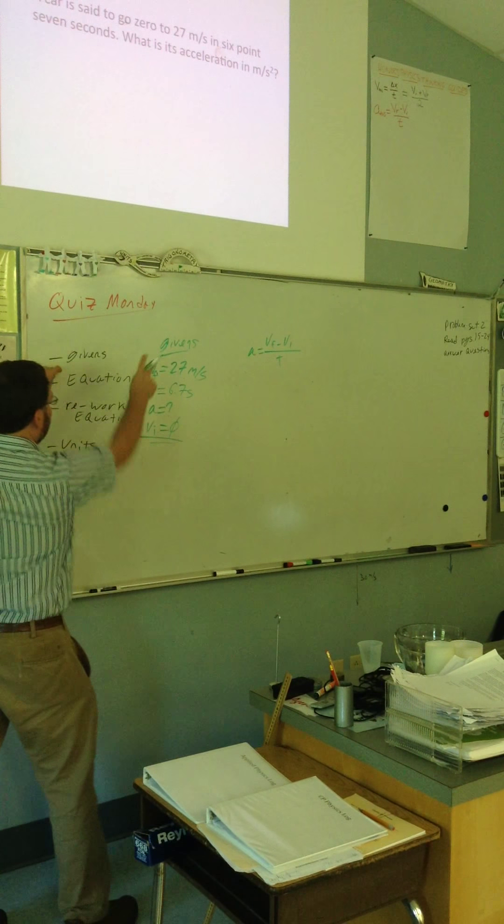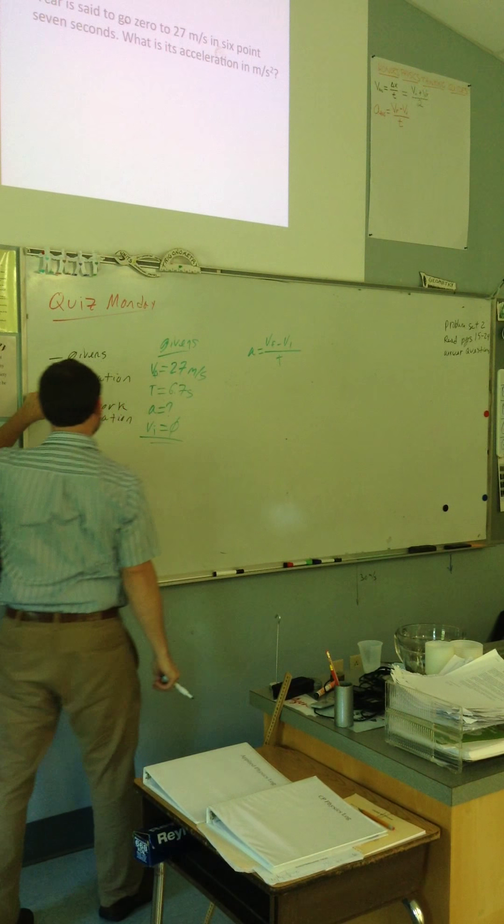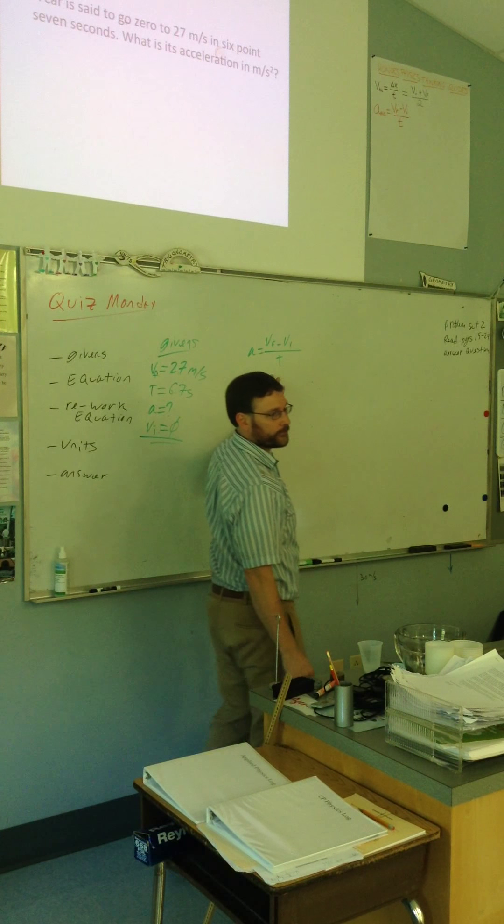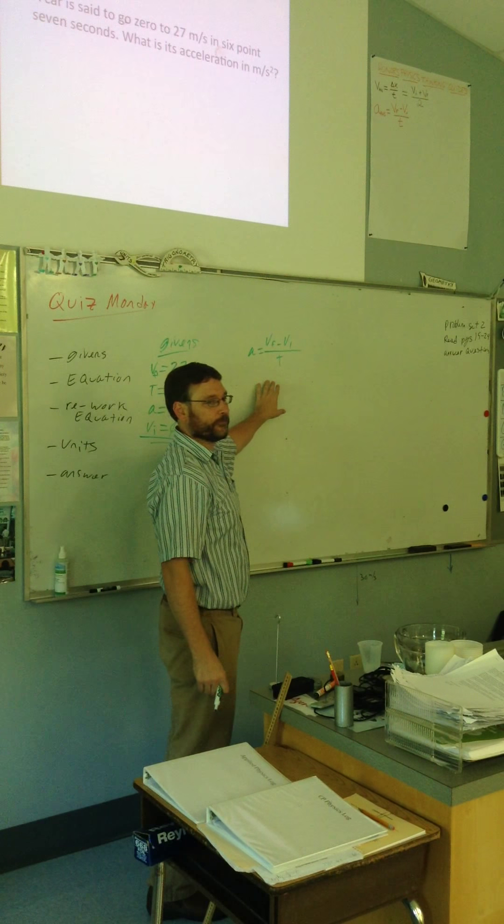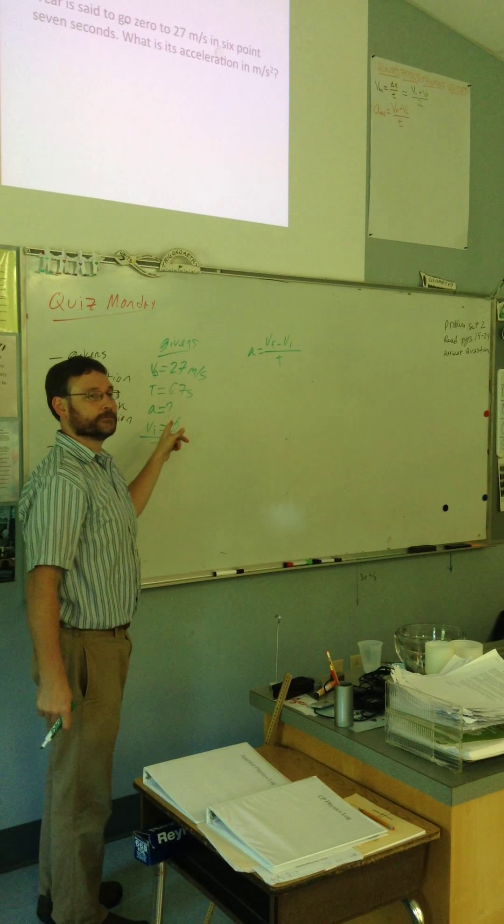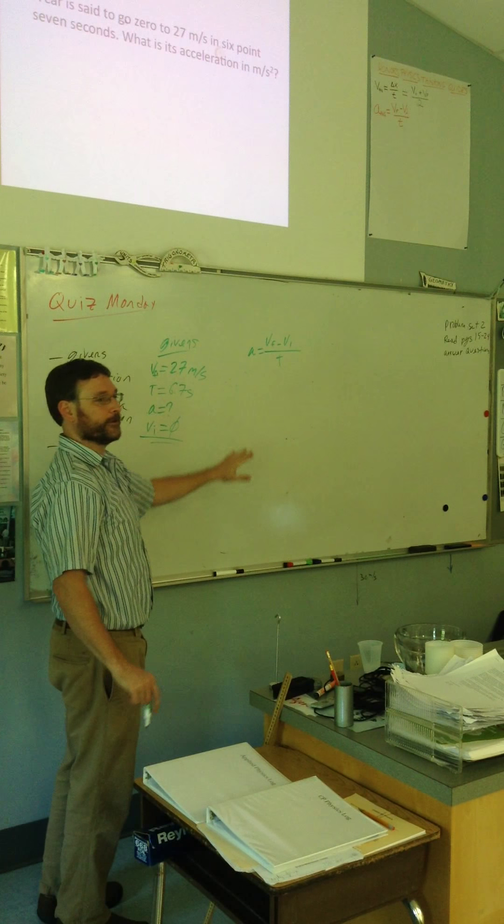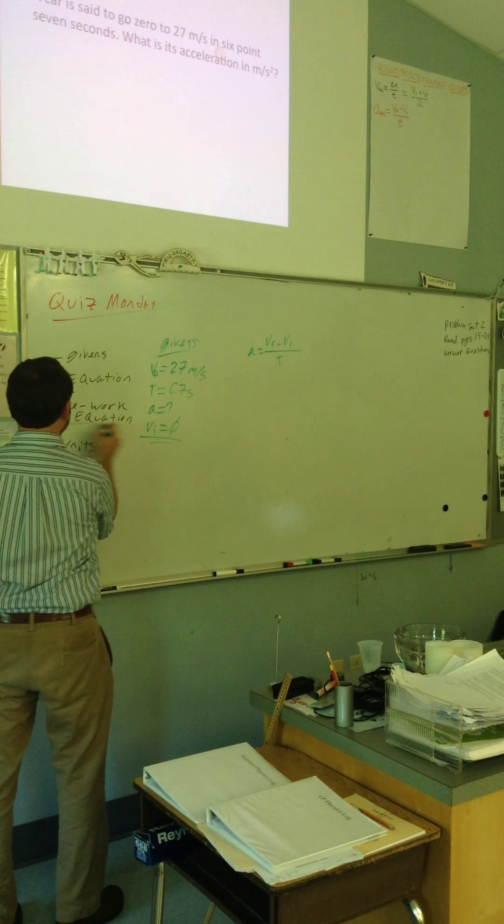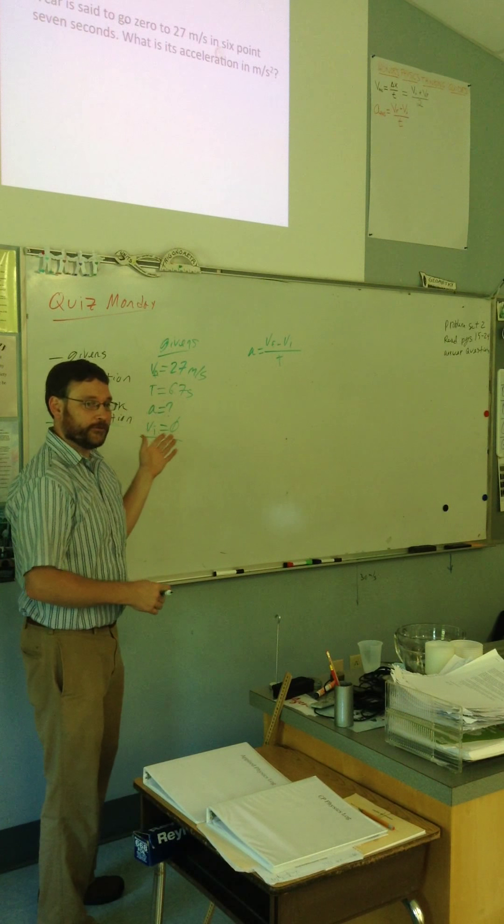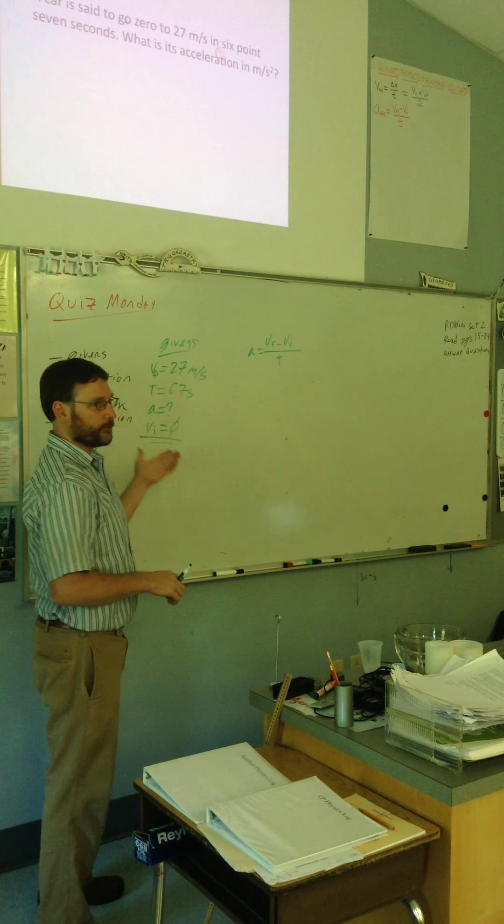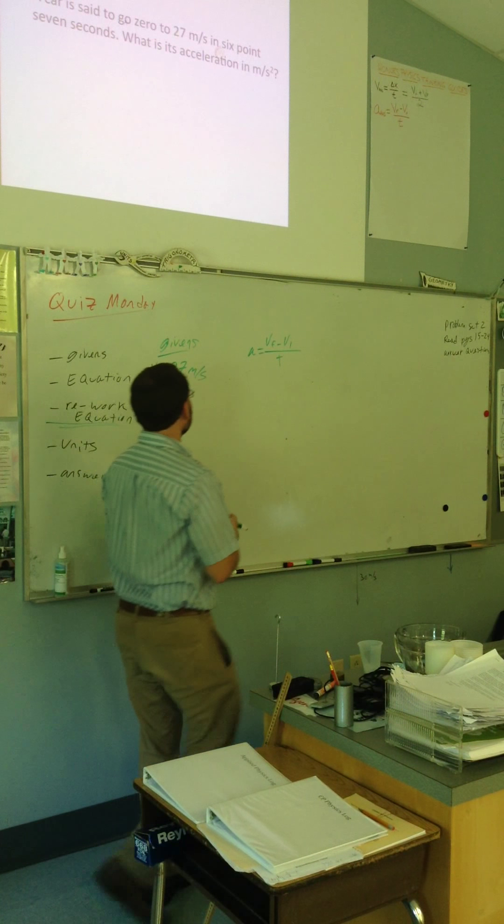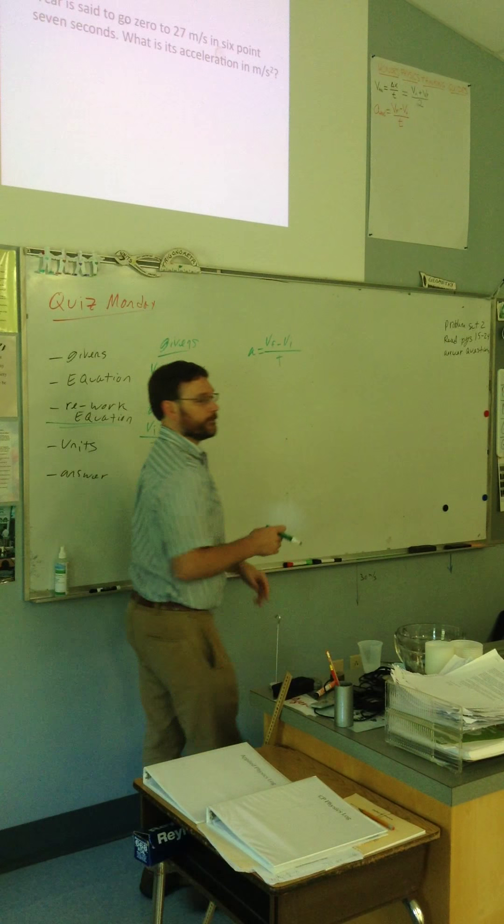Okay, so, I've done givens. I've written my equation. Reworking the equation means, do I need to change the order that things come in in order to solve it? So, right now, this is solving for A, for acceleration. Is that what I want? Yeah, so I don't have to rework it. So, this step right here, you don't have to do in this problem. What that means is, you get a three point. Because the problem is still worth five points, but you don't have to do that step.